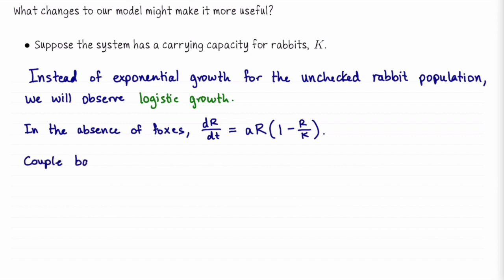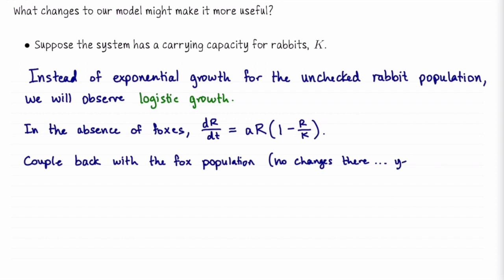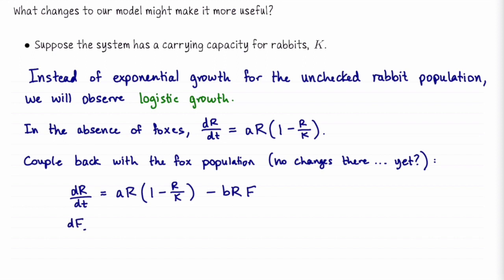Now let's couple this back with the fox population. We're not going to make any changes to the fox population in this lecture, but you're welcome to think of what you might change about that model too. We'll have dr/dt equals a times r times the quantity 1 minus r over k, minus b times rf. The fox equation is unchanged: df/dt equals negative cf plus d times r times f.